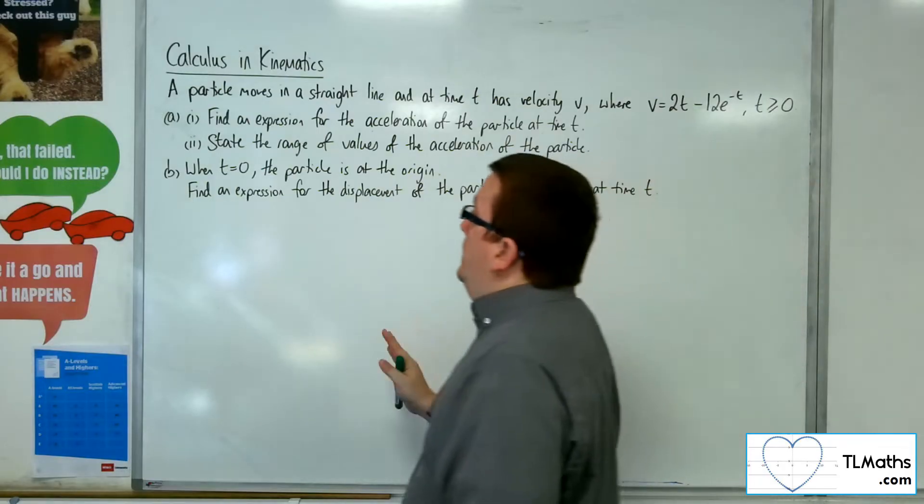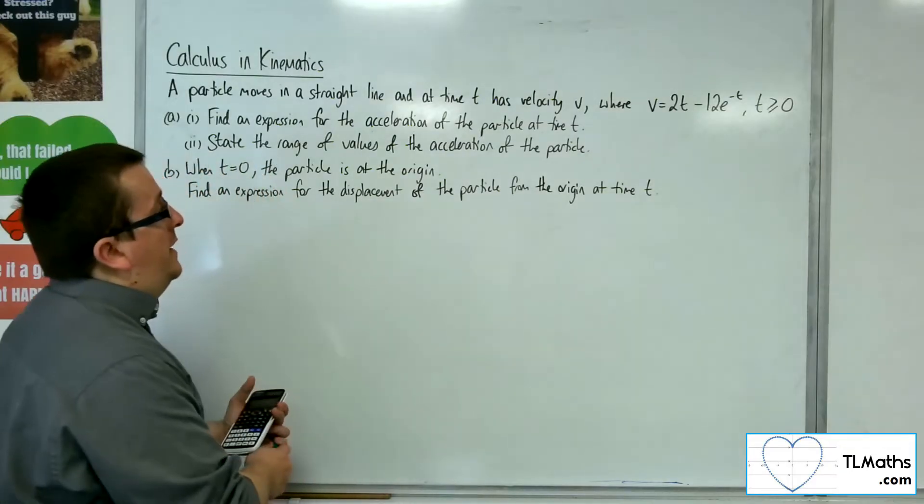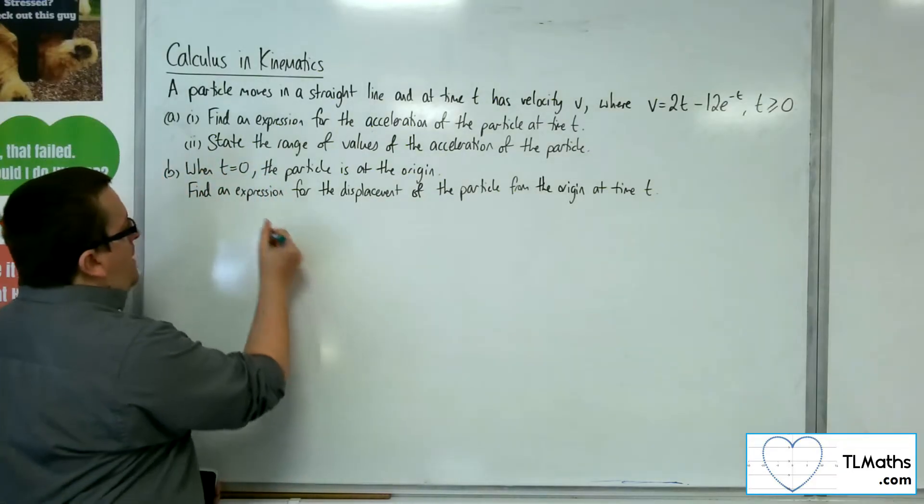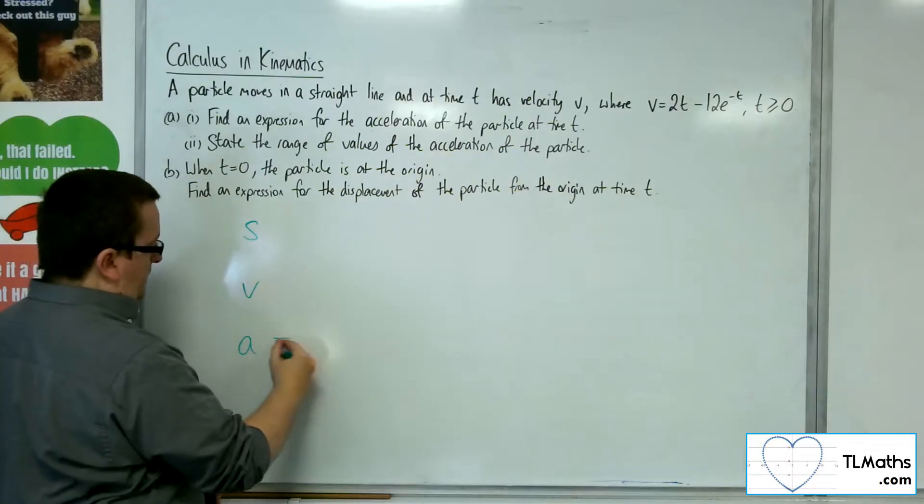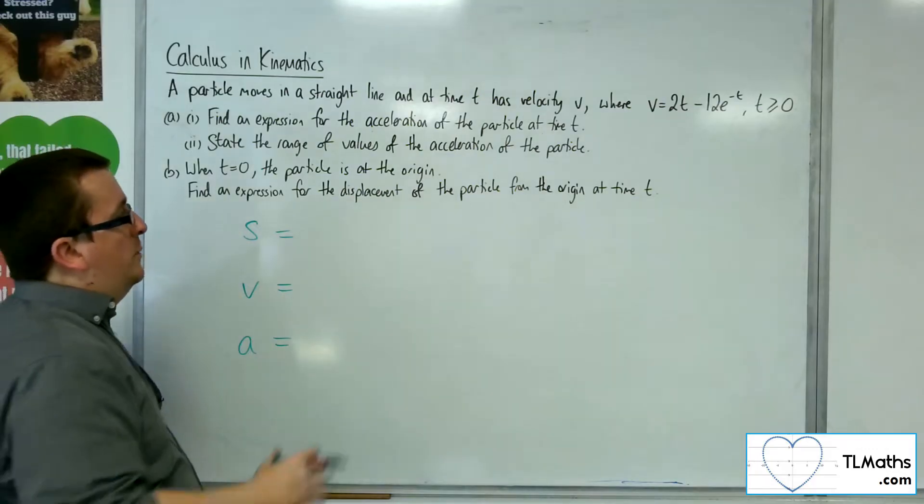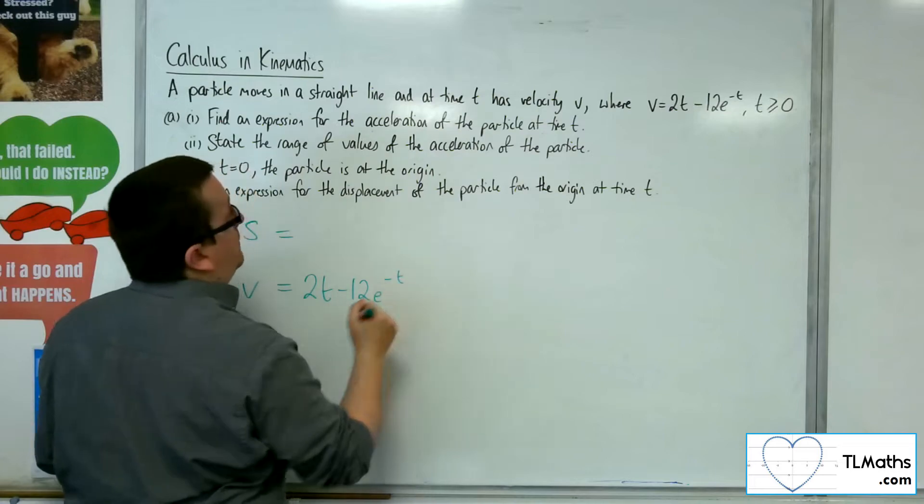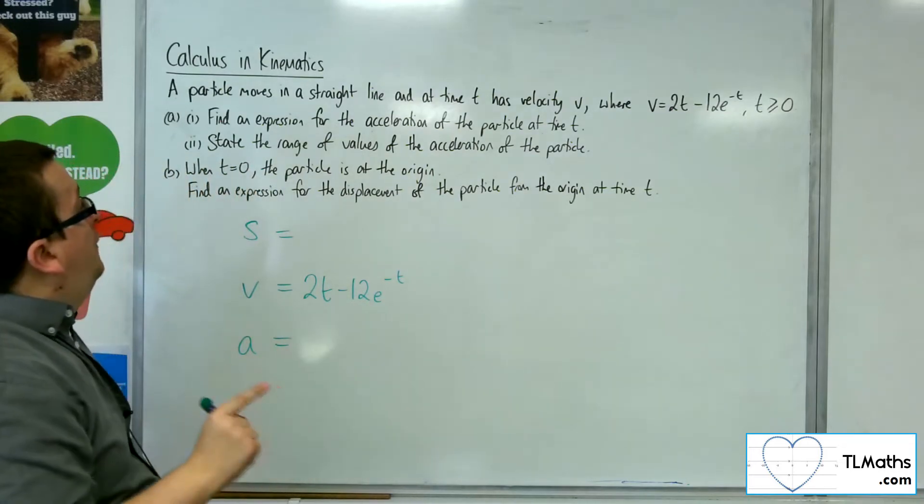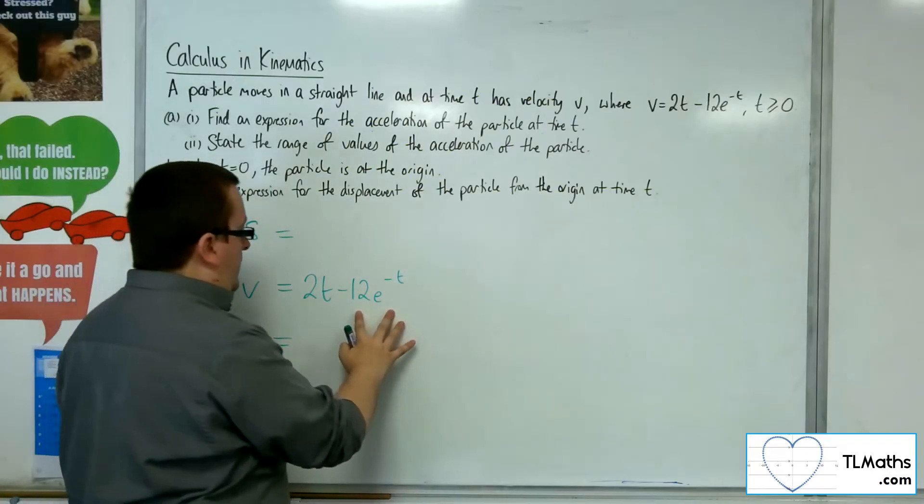First of all, find an expression for the acceleration of the particle at time t. So remember that we're looking at s, v, then a. So reading off Suvatt in that direction, we can understand that v is 2t minus 12e to the minus t. So if I want to find the acceleration, I need to differentiate down. So differentiate this.